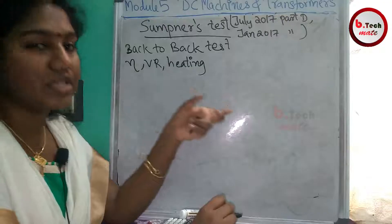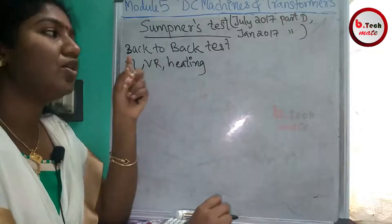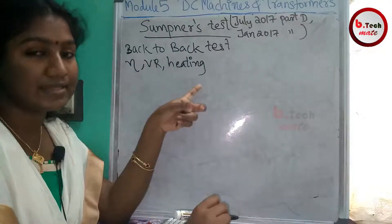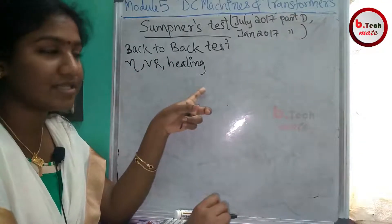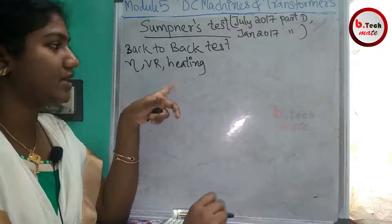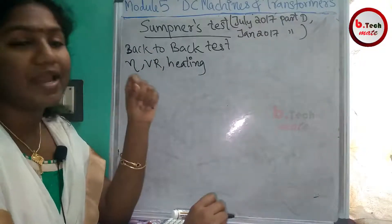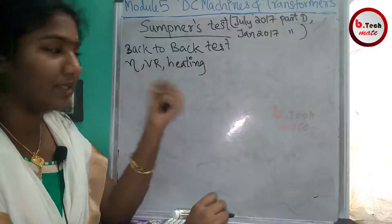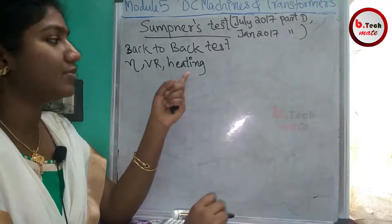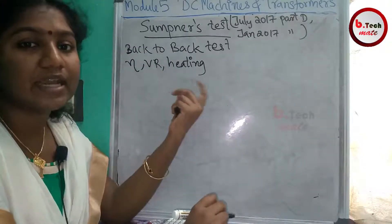Transformers are mainly tested using three tests: the OC test or no-load test, the SC test or short circuit test, and the Sumpner's test. In the OC and SC tests, we don't actually load the transformer. In the Sumpner's test, we can simulate heating conditions.